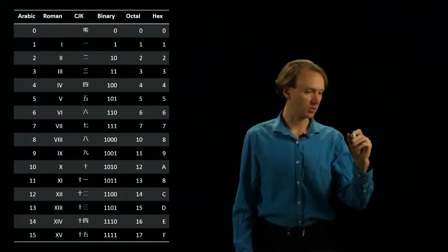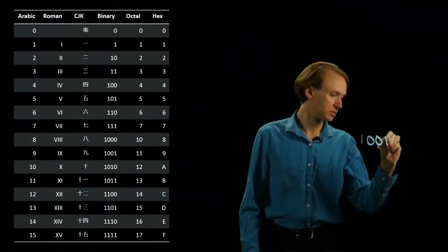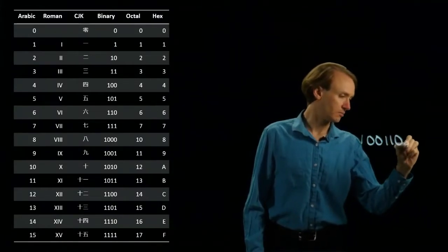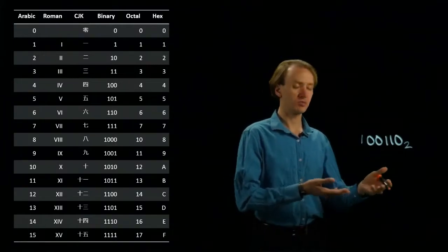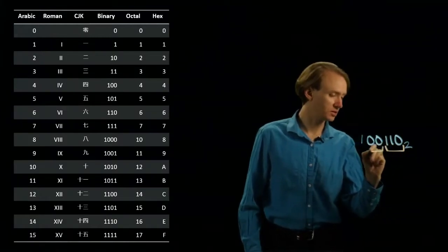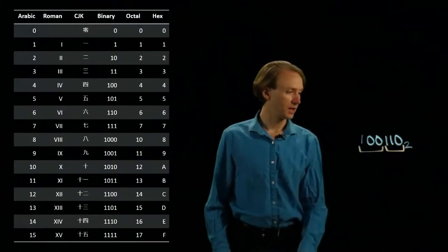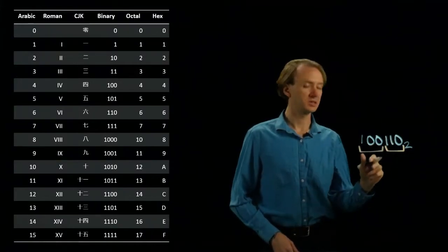So we'll start with a small number like 100110 in binary. If I want to convert this number into octal, I'll start by grabbing blocks of 3 bits, and I'm going to look for these bits in my table.